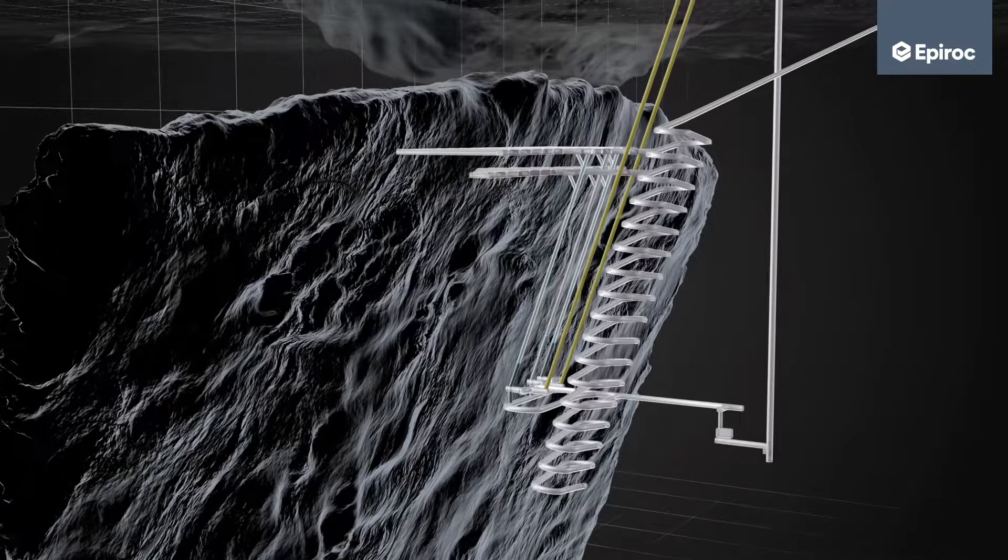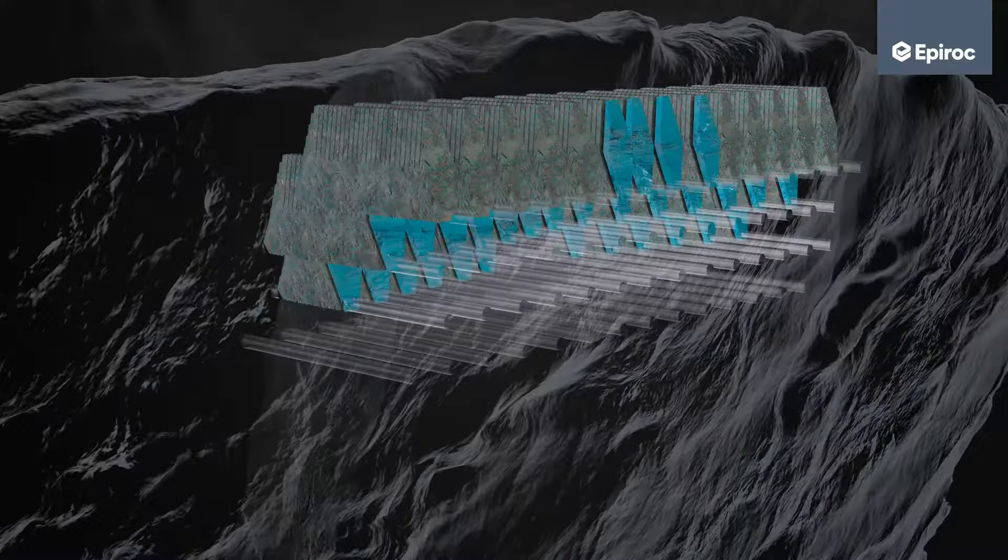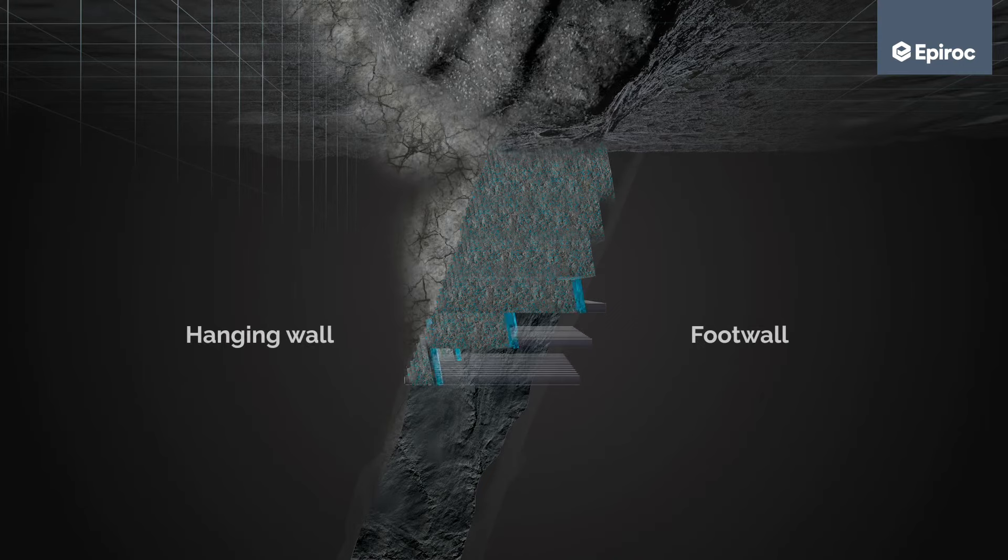Mining starts at the top of the ore body and progresses downwards in a safe sequence. It is a productive mining method where all of the ore is fragmented by blasting and the host rock in the hanging wall of the ore body caves.